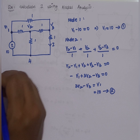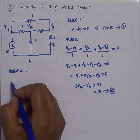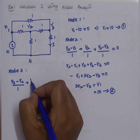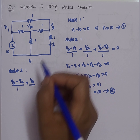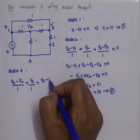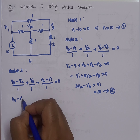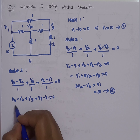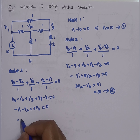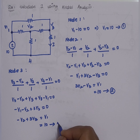At node 3, the KCL equation is: (V3 − V2)/1 + V3/1 + (V3 − V1)/1 = 0. Simplifying: −V1 − V2 + 3V3 = 0. Substituting V1 = 10, we get the third equation: −V2 + 3V3 = 10.